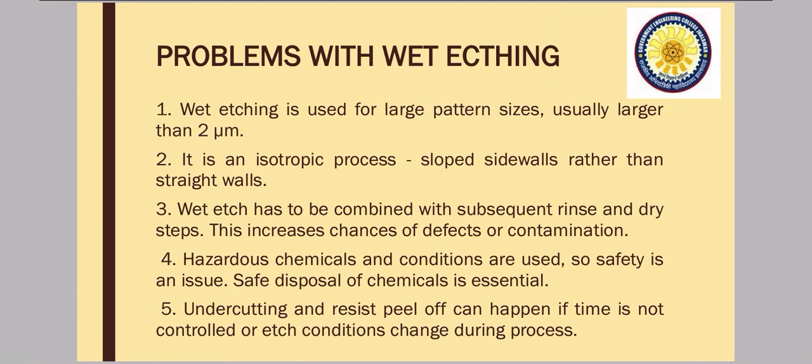Wet etching is generally used for large pattern sizes, generally larger than 2 micrometers. It is an isotropic process, that means it is in all directions, with sloped sidewalls rather than straight walls kind of structure we get with this wet etching.